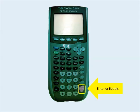Below those is the enter key on the bottom right, which functions as an equal sign. Clear is located above the basic functions. This key either clears the entire line you are currently typing, or clears the entire screen. Once you clear the screen, though, you can't go back.